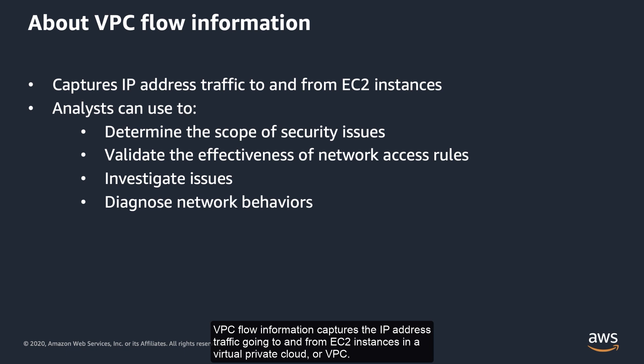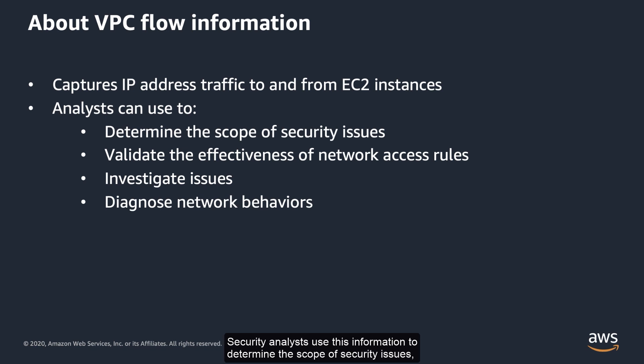VPC flow information captures the IP address traffic going to and from EC2 instances in a virtual private cloud, or VPC. Security analysts use this information to determine the scope of security issues, to validate the effectiveness of network access rules, to investigate issues, and to diagnose network behaviors.